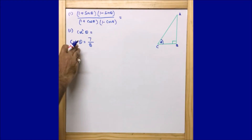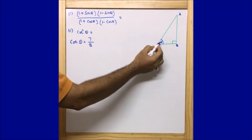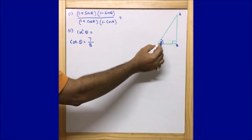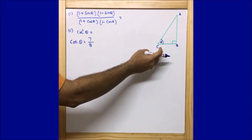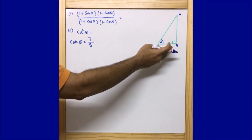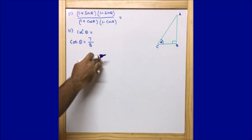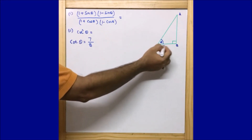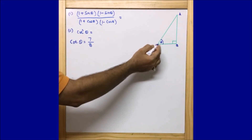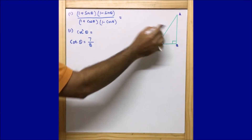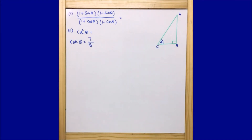tan θ is the side opposite to angle θ, that is AB, upon the adjacent side to angle θ, that is BC. So cot θ is the opposite of tan θ — that is BC upon AB — meaning the adjacent side upon the opposite side to angle θ.